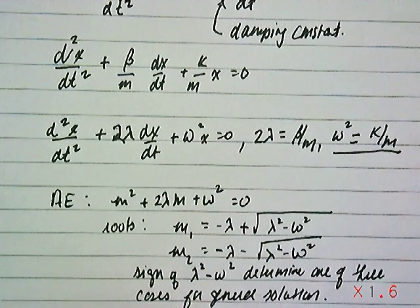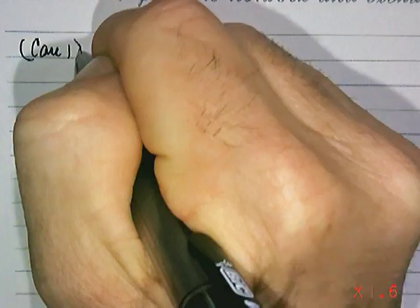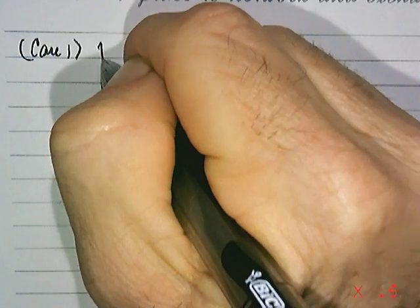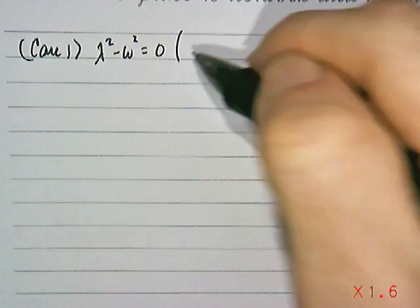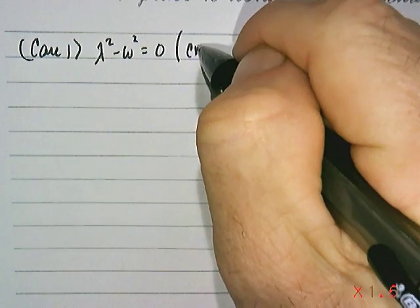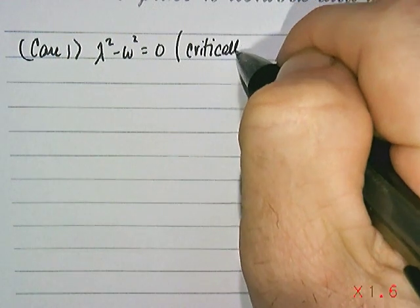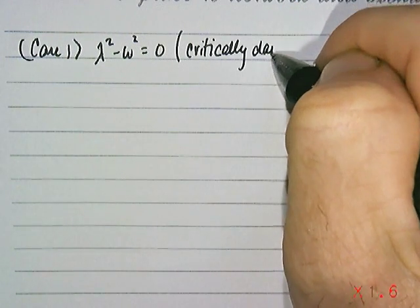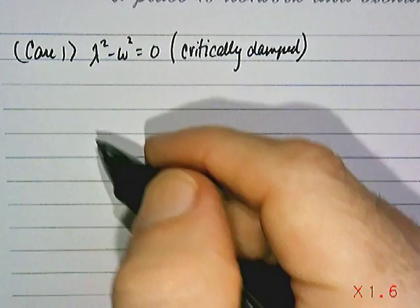Let's start with the first case where it's actually equal to zero. We'll look at the situation that λ² minus ω² equals zero. This has a name - this is when your system is what we call critically damped.